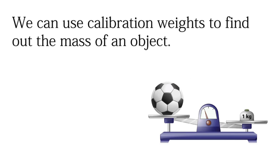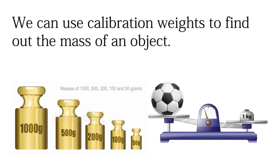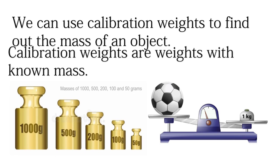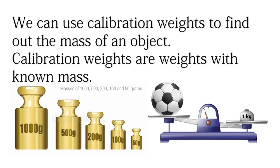For example, calibration weights include 1000 grams, 500 grams, 200 grams, 100 grams, and 50 grams. We can use these calibration weights — weights with known mass — to find out the mass of an object.